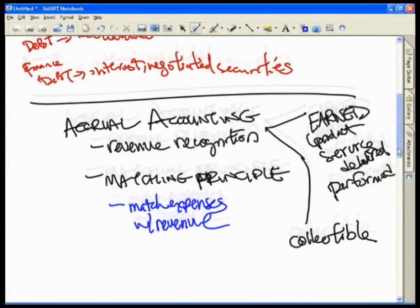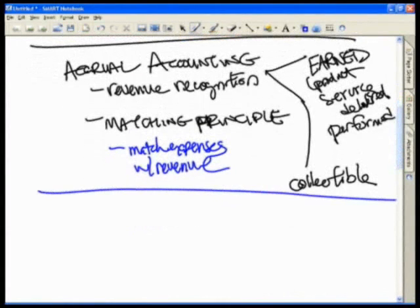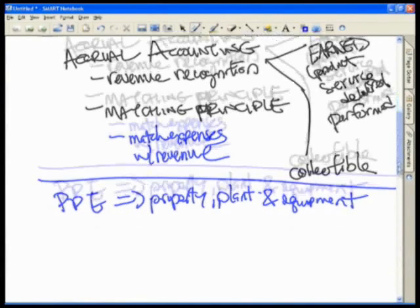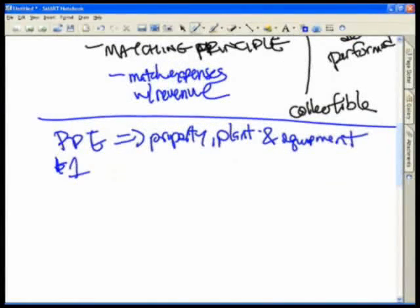This is another good example. For instance, property, plant and equipment, PP&E. This goes back to how depreciation arises. Let's say I spent a billion dollars and built a factory. This factory, I estimate, has a useful life of 20 years.